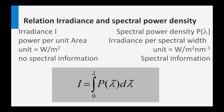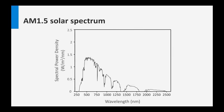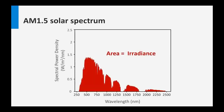The relation between both is indicated by an integral: I is the irradiance, P-lambda is the spectral power density, and if you integrate over the spectral power density you get the irradiance. As an example, let's take the AM 1.5 solar spectrum introduced in week 1. Here you see the spectral power density expressed in watt per square meter per nanometer. The black line shows the spectral power density, which means the irradiance is the area underneath that curve — integrating it gives you the irradiance.